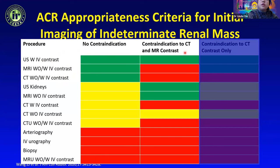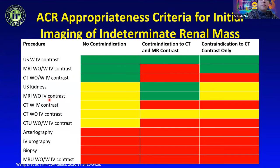If the patient has a contraindication to CT and MRI contrast, then ultrasound with contrast becomes the modality of choice, along with ultrasound of the kidneys and MRI without contrast. If the contraindication is to CT contrast only, then usually we would do an MRI with and without contrast, though some institutions may prefer ultrasound with IV contrast.